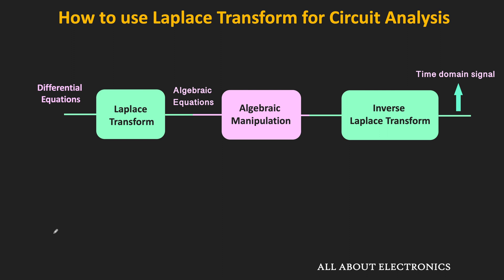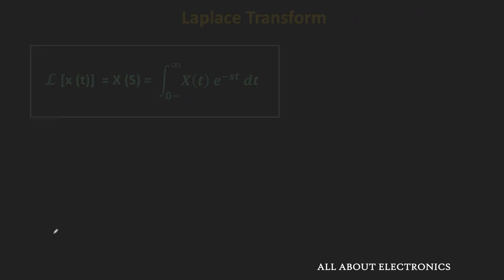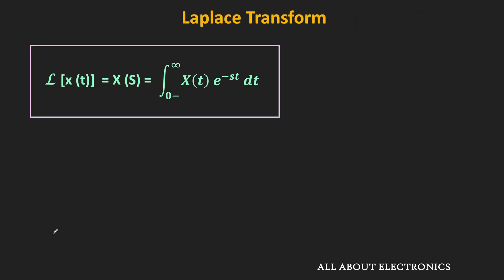Now let us see the formal definition of this Laplace transform. If x(t) is the time domain signal, then its Laplace transform is denoted by X(s) or L{x(t)}, where L represents the Laplace transform of the signal. It is given by the expression: integration from 0⁻ to infinity of x(t) times e to the power minus st times dt. We are assuming that the signal x(t) exists for t greater than or equal to 0, and x(t) equals 0 otherwise — that is, x(t) is a causal function — which is why the limit extends from 0 to infinity.